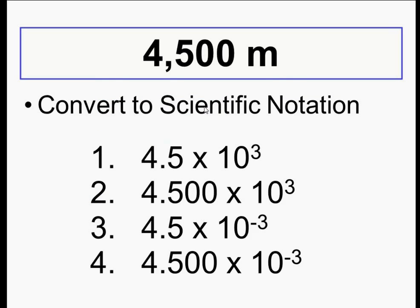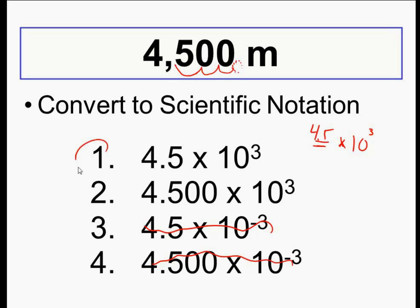Can we convert this to scientific notation? It's a number that's greater than one, so it's going to have a positive exponent. I'm going to make a fake decimal — it doesn't exist — I'm just going to make it right here. I'll move it 1, 2, 3 — so this is going to be times 10 to the third. My decimal point is now moving between the four and the five, so I'm going to say 4.5 times 10 to the third. There are two significant figures in this number — the ending zeros are not important when there's no decimal point. I have one sig fig, two sig figs — and 4.5 has two sig figs too. So answer number one is correct.